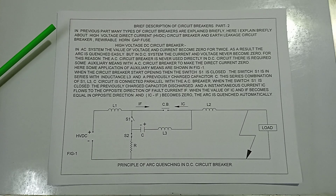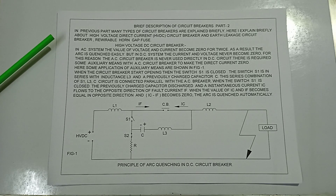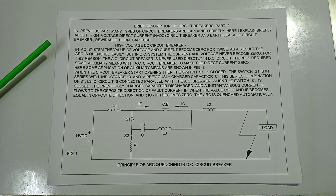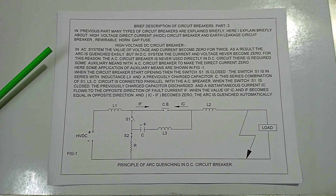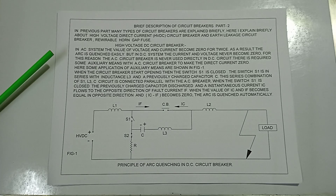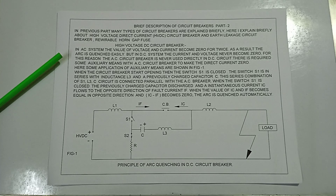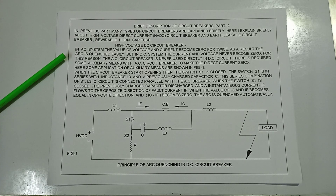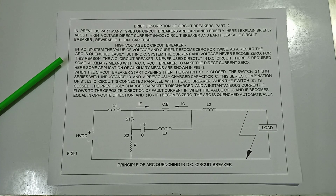In the previous part, many types of circuit breakers were explained. Here I explain briefly about high voltage direct current (HVDC) circuit breakers. In an AC system, the value of voltage and current become zero twice per cycle, so the arc is extinguished easily. But in a DC system, the current and voltage never become zero, so an AC circuit breaker can never be used directly in a DC circuit.